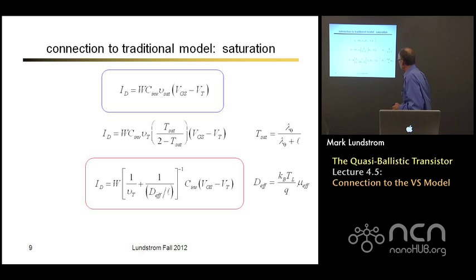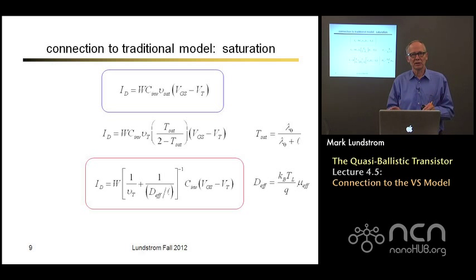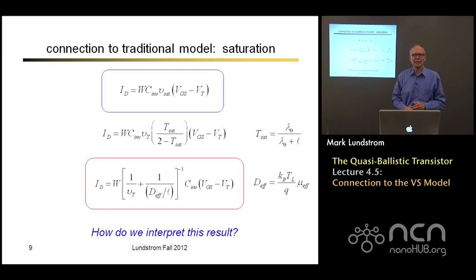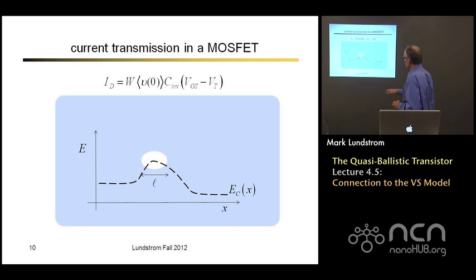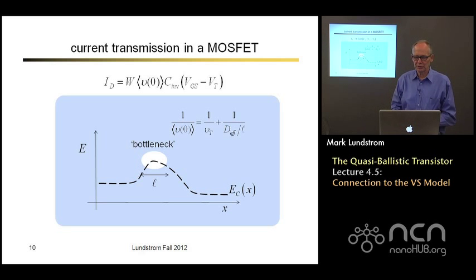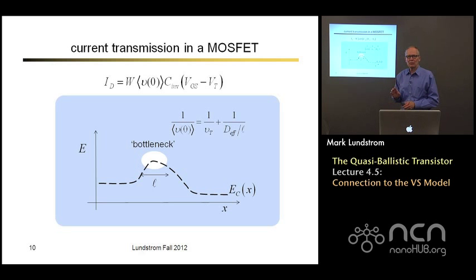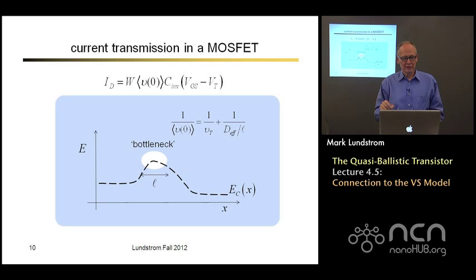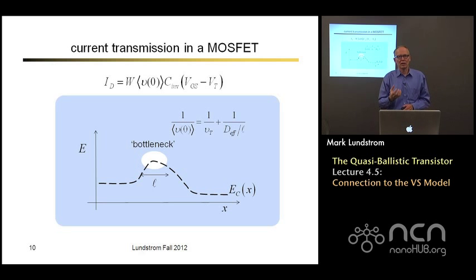Taking this expression and plugging it into the current expression, and remembering that products of thermal velocity times mean free path are related to diffusion coefficients, I can rearrange terms and end up with a simple expression: W times something with dimensions of velocity times charge. The effective diffusion coefficient D_eff is just (kT/q) times mu_eff — the diffusion coefficient deduced from the real effective mobility of electrons.